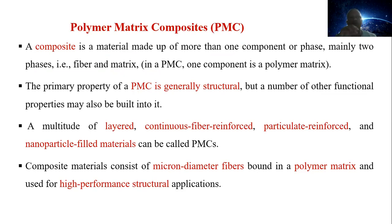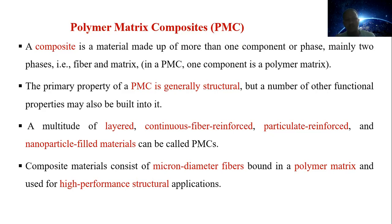The primary property of polymer matrix composites is generally structural, but a number of other functional properties may also be built into them. A multitude of layers in a stack of lamina — continuous fiber reinforced, particulate reinforced, and monoparticle filled materials — can all be called polymer matrix composites. Chopped fiber can also be added to increase the strength and functionality of the material, and a number of additives may also be included.